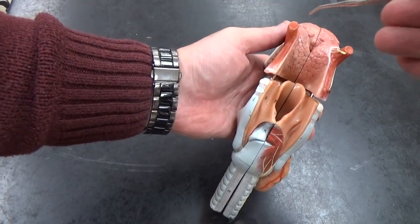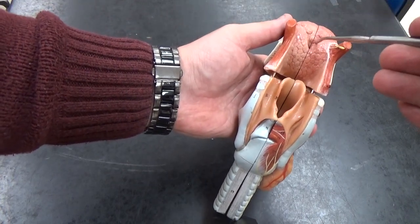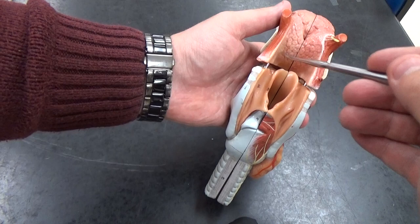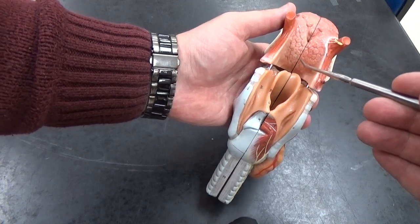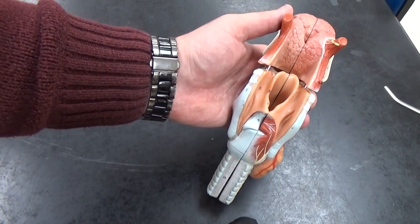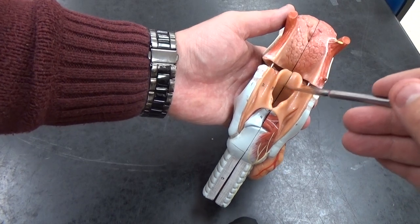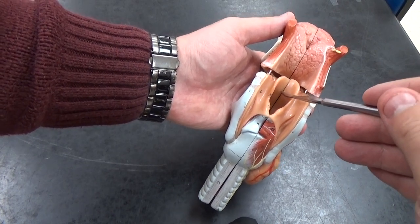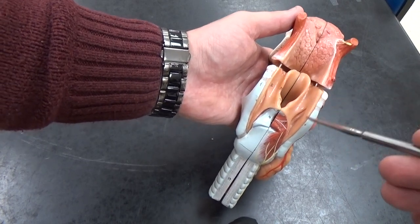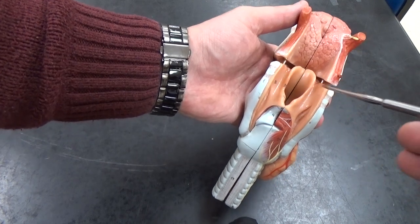You can of course see the different papillae up here. There's your lingual tonsil. Your epiglottis is back here. Your larynx is this whole region right here.